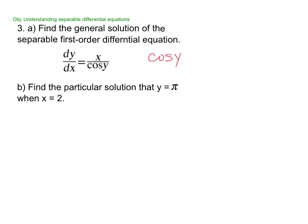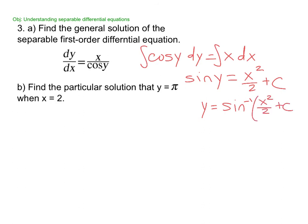Alright. So we have cos(y) dy equals x dx. That's me cross-multiplying. Integrate. Whose derivative is cosine? So sin(y) equals x² over 2 plus C. And again, that would be the answer in terms of the book. If I wanted our general, I would solve. I would do arcsin y equals sin⁻¹(x²/2 + C). Alright. So that would be my general form.